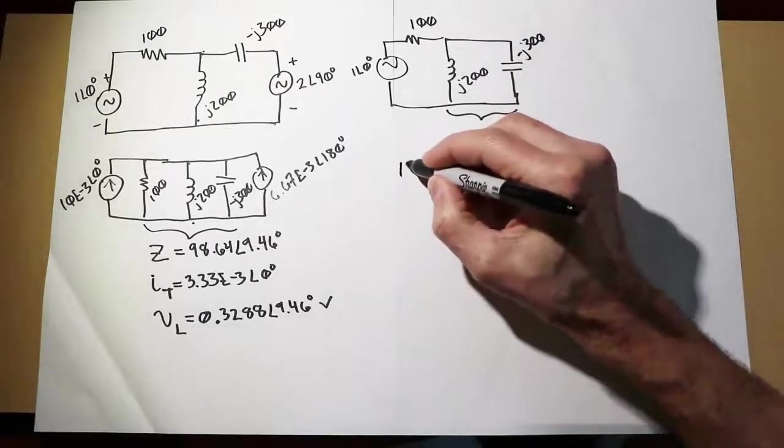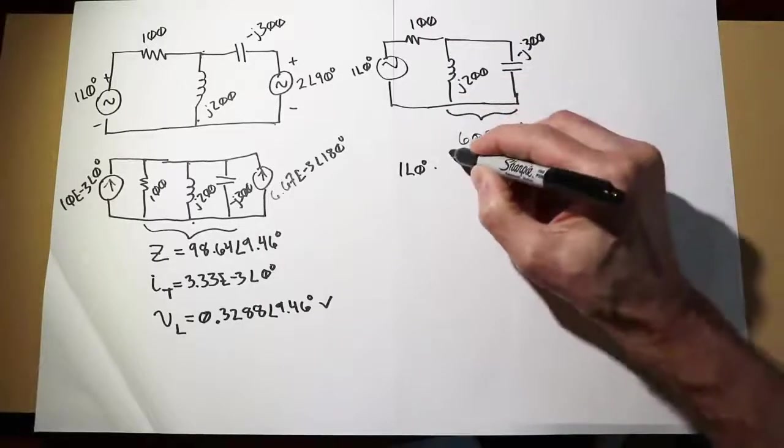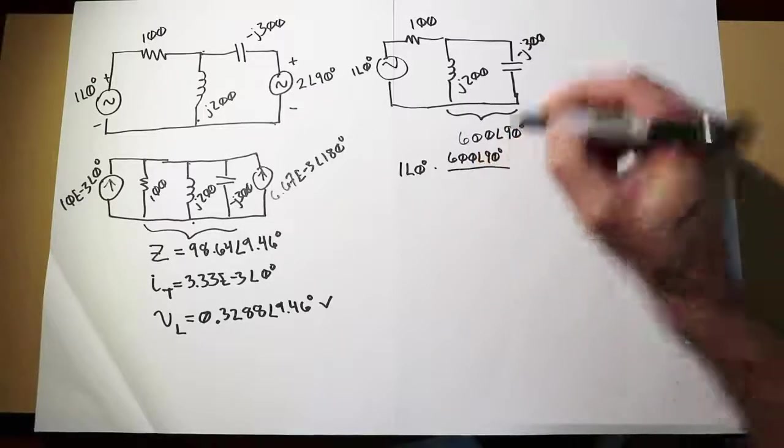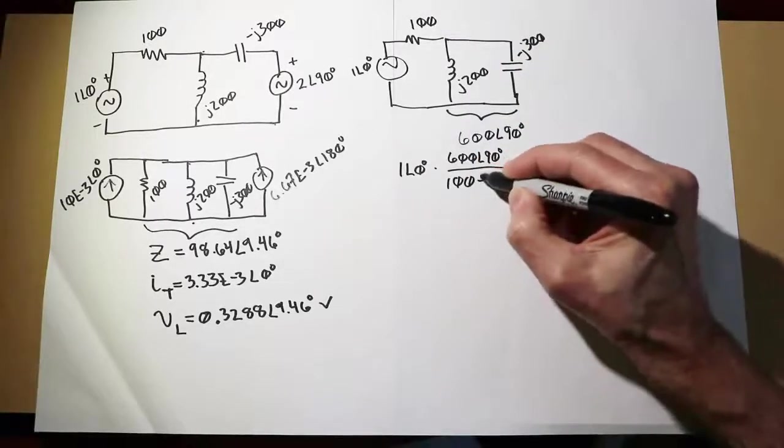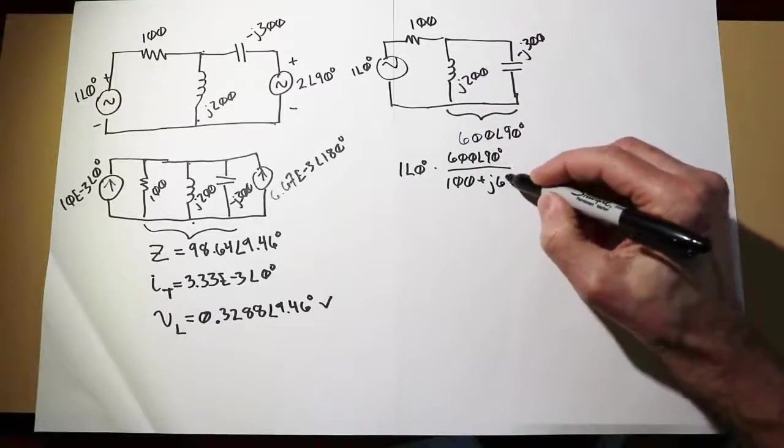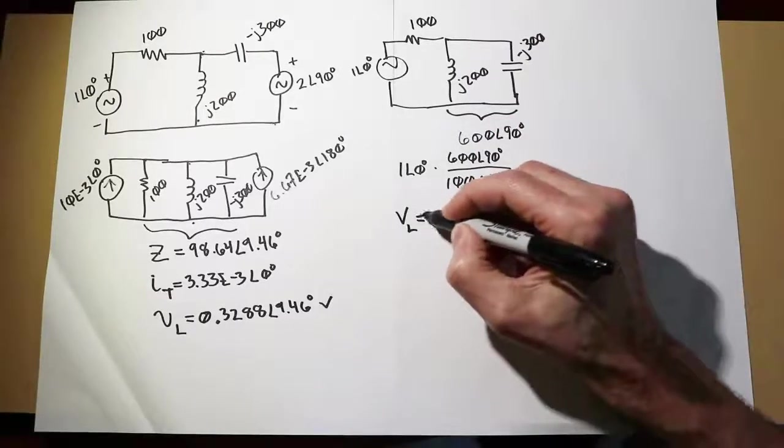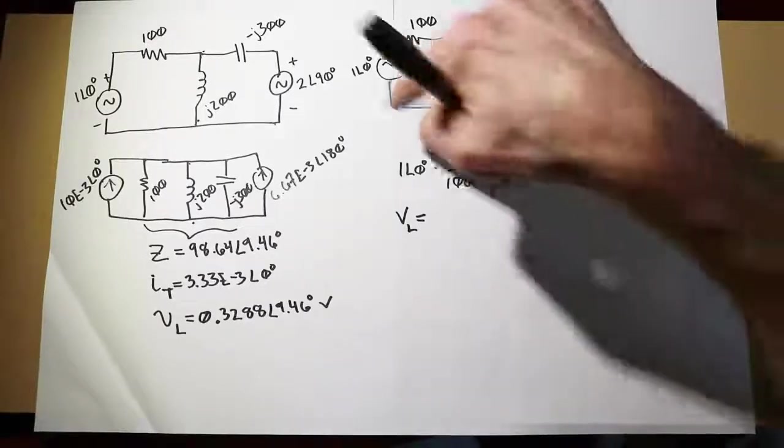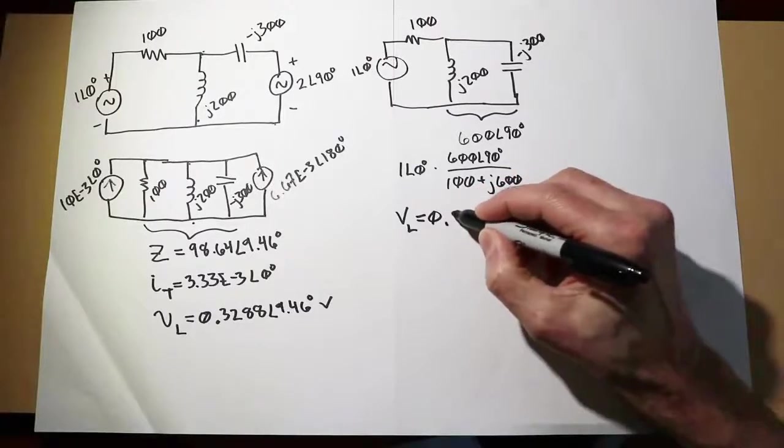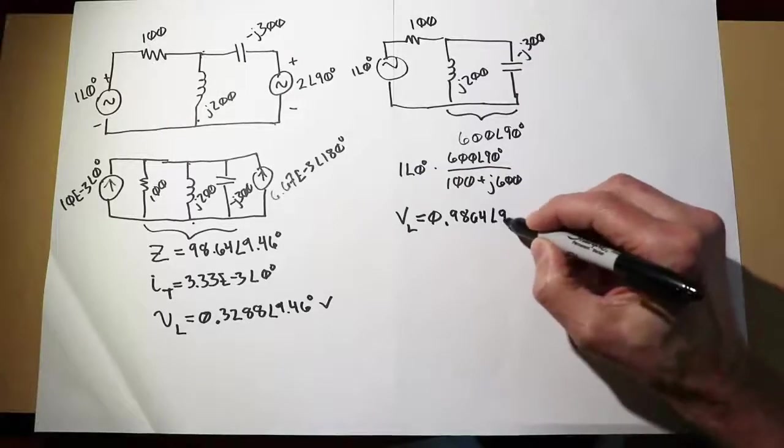I now do a voltage divider on that. That would be 1 at an angle of 0 times the item we're interested in, which is 600 angle 90, divided by the total, which would be 100 plus this impedance. Probably easiest to write that as J600. When we calculate that out, the voltage across the inductor, as produced by that first source acting alone, will be 0.9864 volts at an angle of 9.46 degrees.